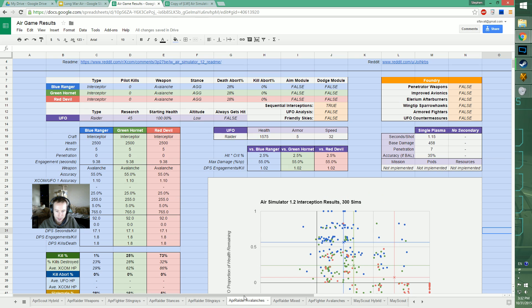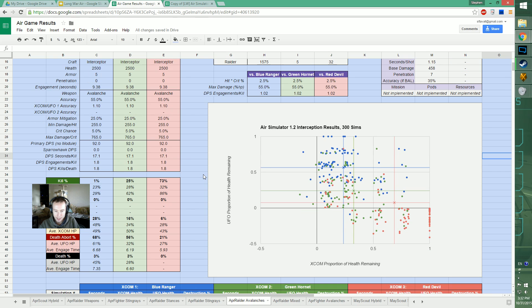I'm going to show you the difference between Avalanches and Stingrays next. This is three intercepts with Avalanches - you can see on average we're killing most of the time, 73% kill rate. Observe how many intercepts just went absolutely terribly though.